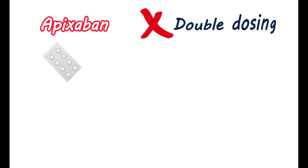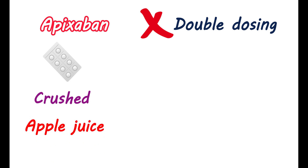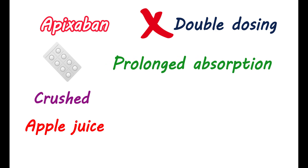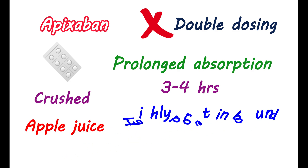Apixaban is available as tablets and can be taken either with or without food. In case of a missed dose, it can be taken as soon as possible on the same day; however, double dosing should be avoided. Tablets can be crushed and suspended in water, or taken with apple juice or mixed with applesauce, and are stable in apple juice or applesauce for up to 4 hours after crushing. Apixaban shows prolonged absorption, with peak plasma concentration observed after 3-4 hours of administration. Around 87% of the medication is bound to proteins.